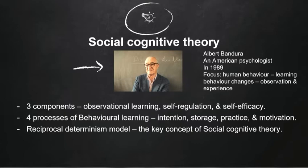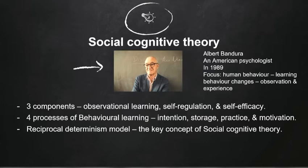This theory shows that learning mostly comes from observing behavior and then imitating that behavior. As we can notice in our society, young people like to follow their idols — for instance, dancing, characteristics, style, and behaviors. These three components show self-regulation as one element of the theory according to Albert Bandura, and also show the reciprocal determinism model, which is the key concept of Social Cognitive Theory.